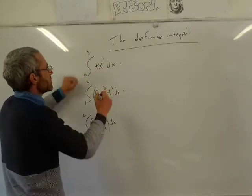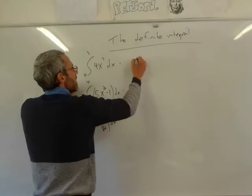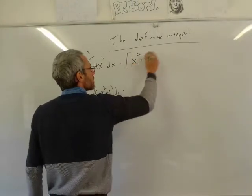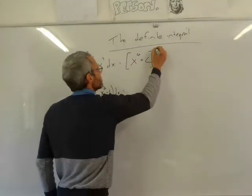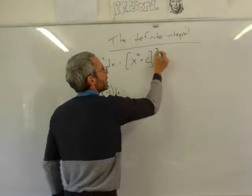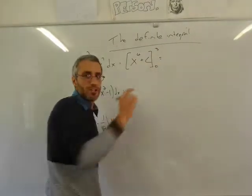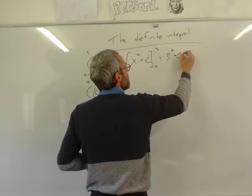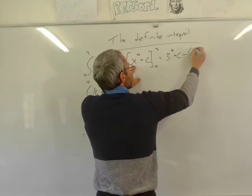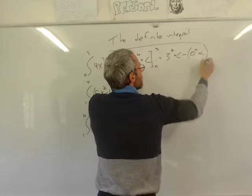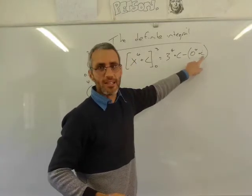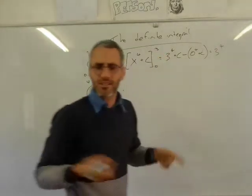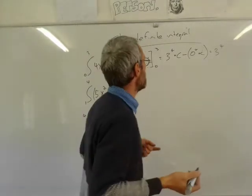What is the definite integral between 0 and 3 of 4x cubed? The answer is going to be x to the power of 4 plus c. Because we're calculating the definite integral, we substitute 0 and 3. We put in 3 first — remember, we always evaluate the top one first. So it's 3 to the power of 4 plus c, minus 0 to the power of 4 plus c. The constant cancels out, and the answer is 3 to the power of 4, which is 81.